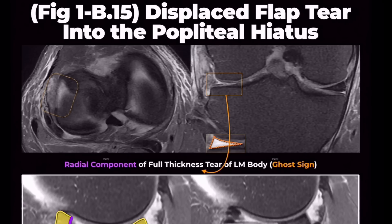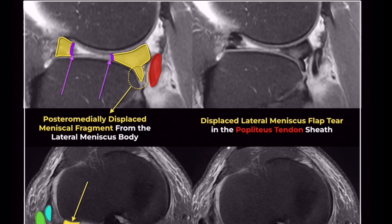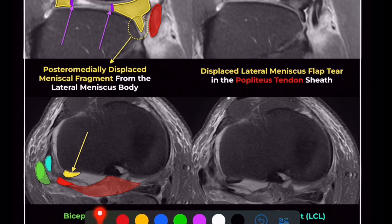Moving on to the sagittal image, there's a large radial tear — but look at the posterior horn. The meniscus has folded and displaced inferiorly, deeper than the popliteal tendon. The popliteal tendon sheath can serve as a potential space for displaced lateral meniscus flap tears, and here the displaced flap tear is extending into the popliteal tendon sheath.